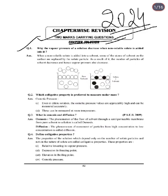First question: Why does the vapor pressure of a solution decrease when a non-volatile solute is added? When a non-volatile solute is added into the solvent, some atoms of the solvent on the surface are replaced by solute particles. As a result, the number of solvent particles decreases, and hence the vapor pressure also decreases.